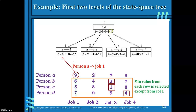Start with the initial node where no assignment is being made. In the first level, the first person is assigned with job 1, job 2, job 3, and job 4 respectively. Then find out the lower bound for each case. When person A is assigned with job 1, the lower bound is 17.